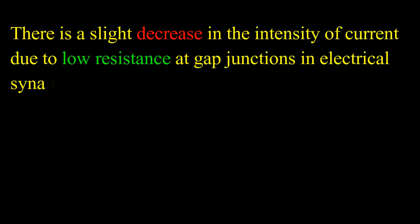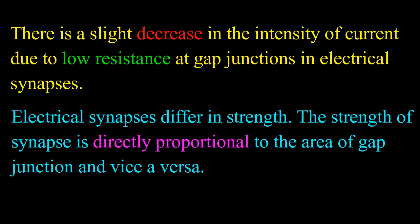There is a slight decrease in the intensity of current due to low resistance at gap junctions in electrical synapses. Electrical synapses differ in strength.